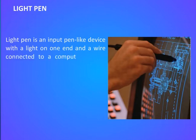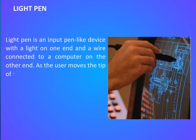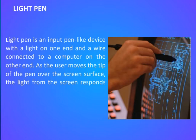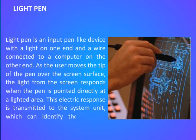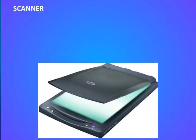As the user moves the tip of the pen over the screen surface, the light from the screen responds when the pen is pointed directly at the lighted area. This electric response is transmitted to the system unit, which can identify the selected menu option.